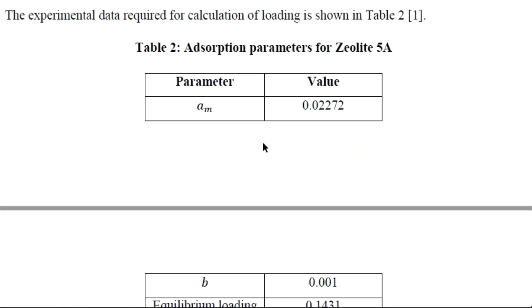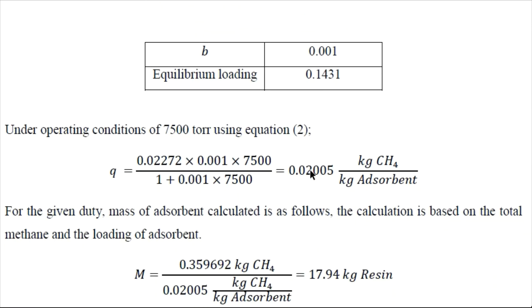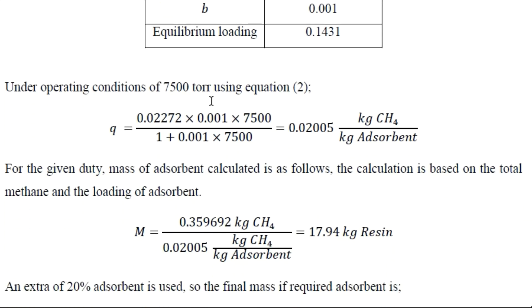So from literature we have taken these values like AM, B and equilibrium loading for this particular adsorbent. So now based on the operating pressure we can determine the amount of the adsorbent required for the particular amount of methane. So for actual scenario this is basically per kg of adsorbent.